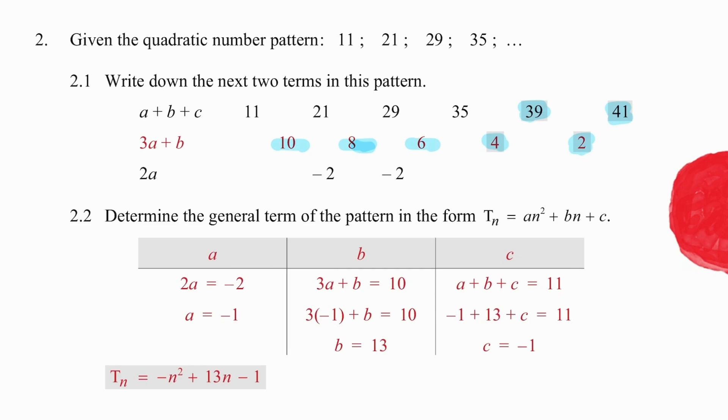Now, in order to work out our formula, we are going to go and connect 2a with the second difference value of minus 2, and use that information to find out that a is equal to minus 1. Then we are going to go and find 3a plus b equal to 10, because that's the value of the first difference. We're going to substitute the value of a, which we have already found, into the formula, and work out that our b value is equal to 13.